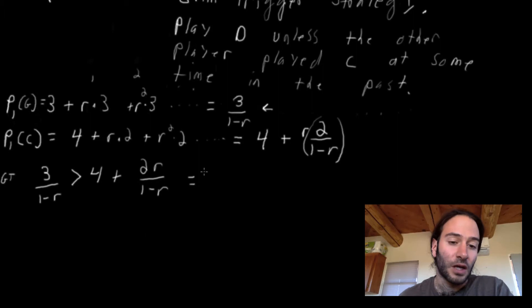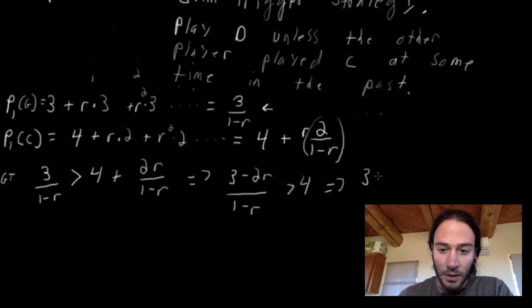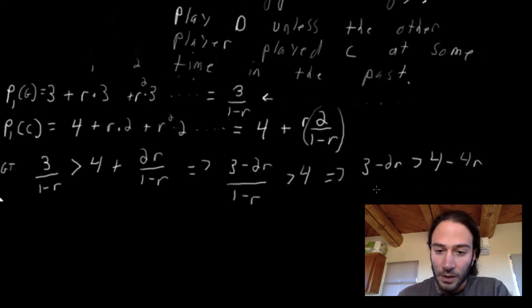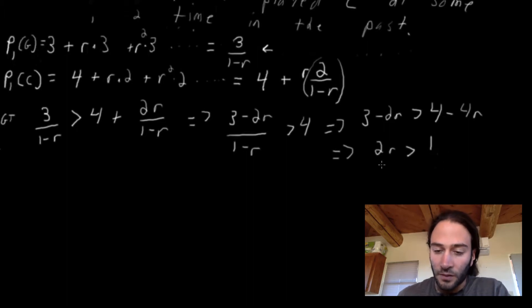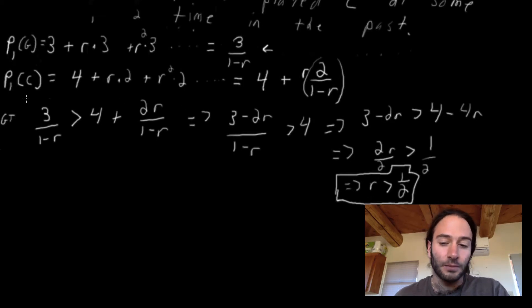We can solve here, and what we want to solve for is r. So this means that three minus two r over one minus r is greater than four. Multiplying both sides, three minus two r is greater than four minus four r, which means two r is greater than one, which means r is greater than one half. So we have this condition that says when is it in player one's best interest to play grim trigger instead of confessing? The condition is if his discount rate is greater than one half, or 0.5.